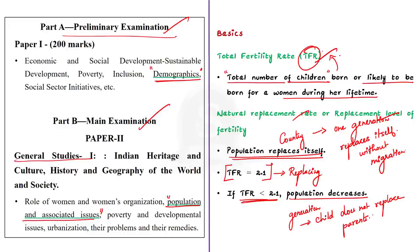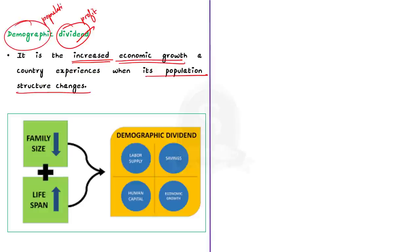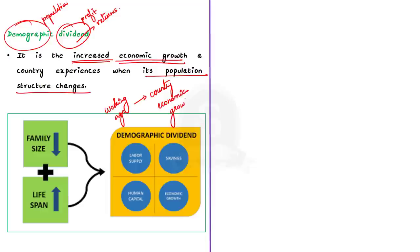The third important term is demographic dividend — the increased economic growth experienced when the population structure changes. 'Dividend' means profit or returns, and 'demography' indicates population. When the population structure changes such that there are more people in the working age population, the country will experience economic growth. This economic growth due to population structure change is called demographic dividend.